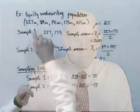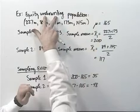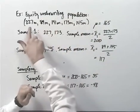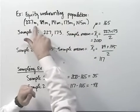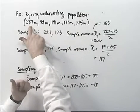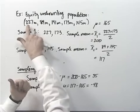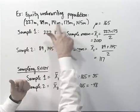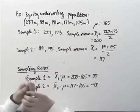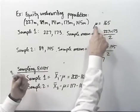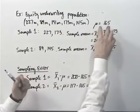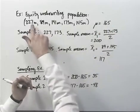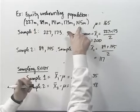To illustrate, suppose we have a population of investment banks that do equity underwriting, and the population consists of only five investment banks. These are the numbers of equity underwriting they did in the past year: $227 million, $89 million, $191 million, $173 million, and $145 million. Since this is the full population, we can form the population mean mu. Adding the five observations and dividing by five gives us a true population mean of 165.